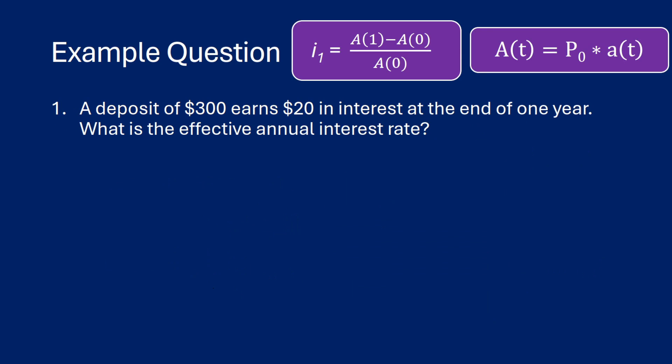So here is an example question. We have our formulas up there in case we need it. But a deposit of $300 earns $20 in interest at the end of one year. What is the effective annual interest rate? So we're putting in $300 and then we're earning $20 in interest. So if we think about this in present value and future value, our P0 in this case is $300 and our amount function at the end of one year is going to be $320.